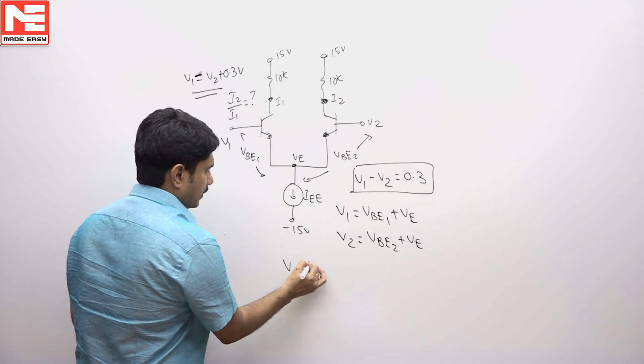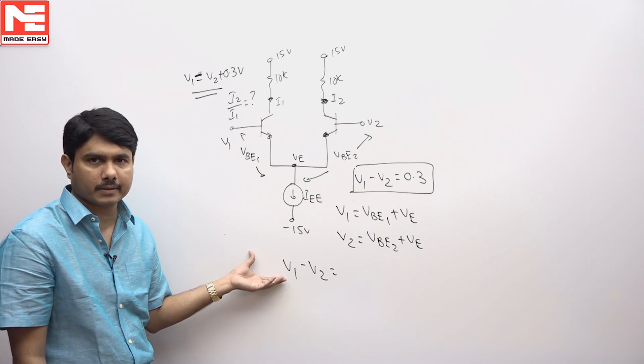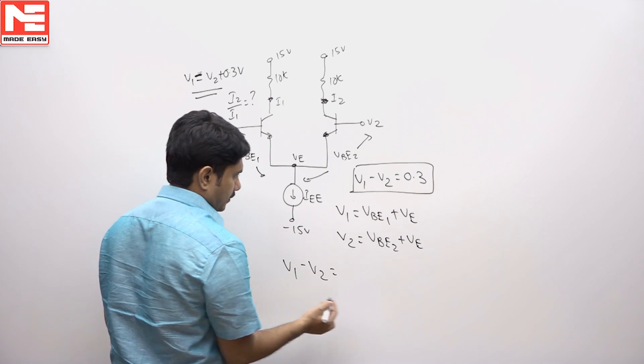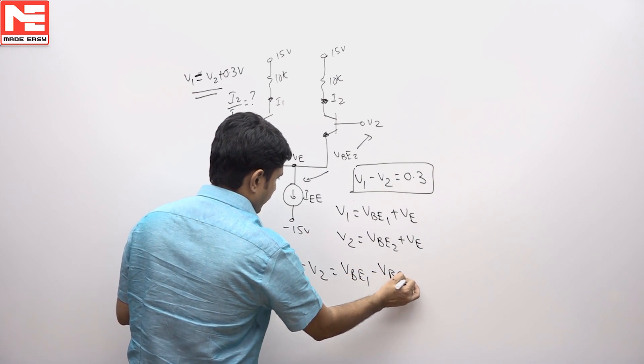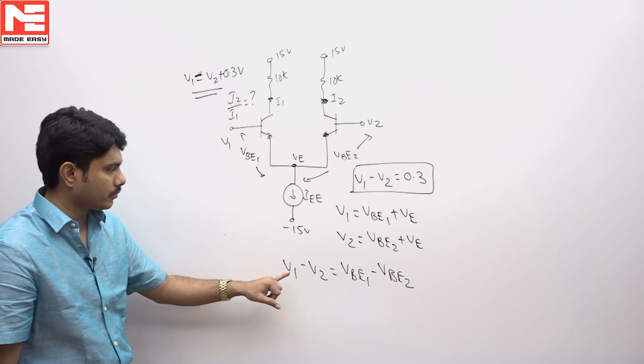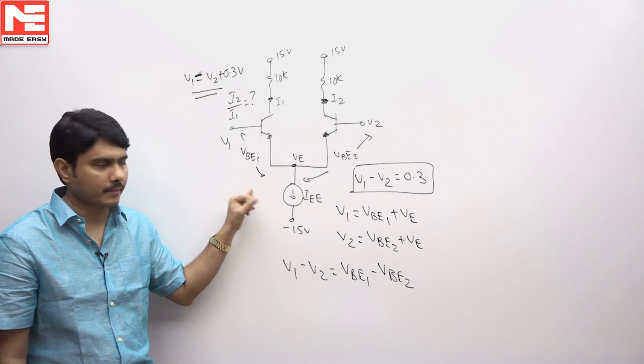So then what is V1 minus V2, you will see the difference between these two potentials from the differential amplifier, the answer is VBE1 minus VBE2. So that means these two differences is nothing but these two diode potential differences.